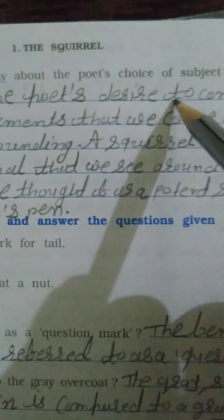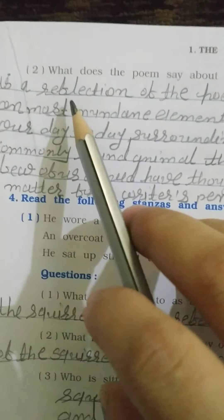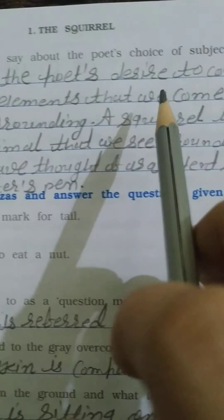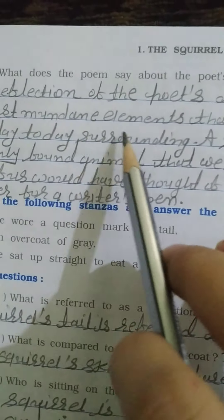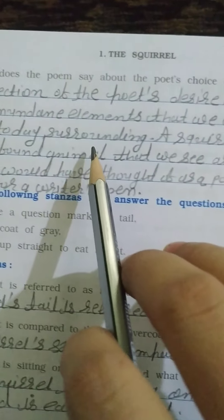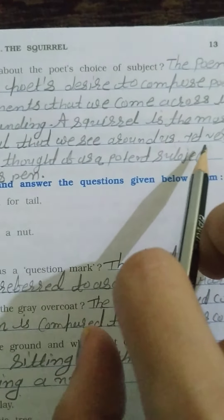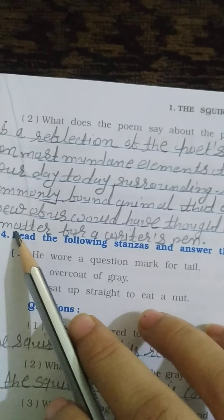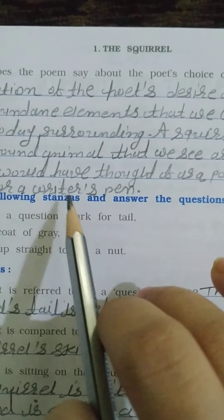What does the poem say about the poet's choice of subject? The poem is a reflection of the poet's desire to compose poetry on mundane elements that we come across in our day to day surroundings. A squirrel is the most commonly found animal that we see around us, yet very few of us would have thought of it as a potent subject matter for a writer's pen.